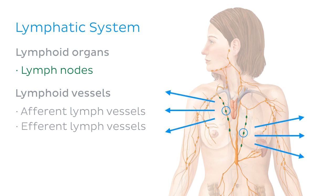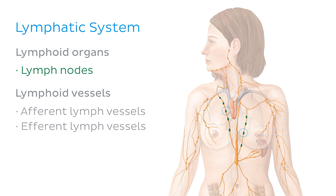Efferent lymph vessels may carry lymph to a vein, into a lymphatic duct, or even to another lymph node. This means one lymph vessel could be efferent from one lymph node and afferent to another. Eventually all lymph ends up in the venous circulation.